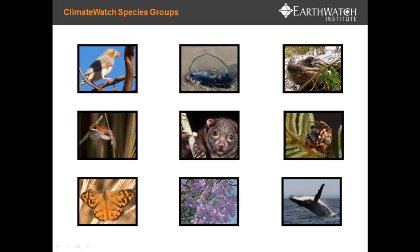Climate Watch is based on indicator species and these species are broken up into different groups. So there's birds, jellies, reptiles, frogs, mammals, spiders, insects, plants, whales, and even marine algae.